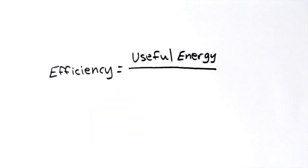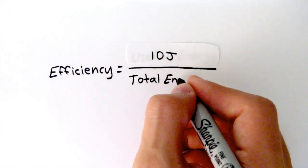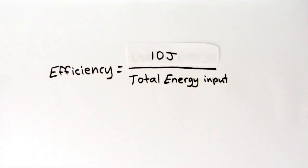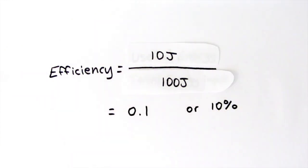We can calculate the efficiency using this simple formula. Useful energy, in this case 10 joules, divided by the total energy input, which in this case is 100 joules, which gives us an efficiency of 0.1, or 10% if you times it by 100.